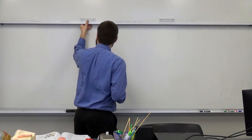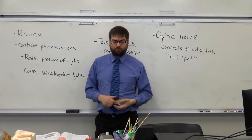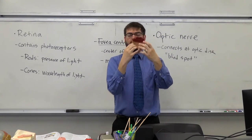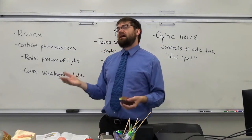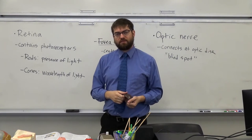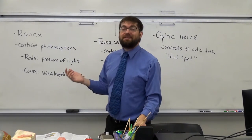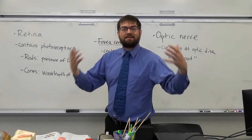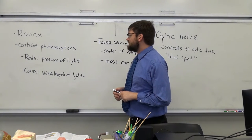Now we get to the part that actually processes all the information — the retina. The retina is the back inside layer of the eye, and it contains photoreceptors: nerves that get activated by light rays. There are two kinds of photoreceptors — rods and cones. Rods help us detect whether there is light at all, making them responsible for dark and night vision.